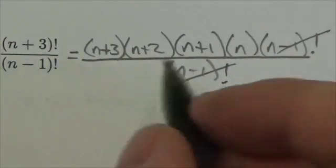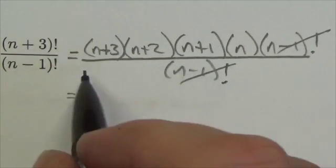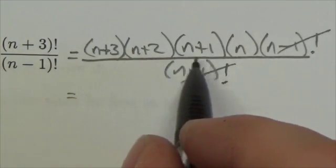And here we go. I'm left with n times n plus 3 times n plus 2 times n plus 1.